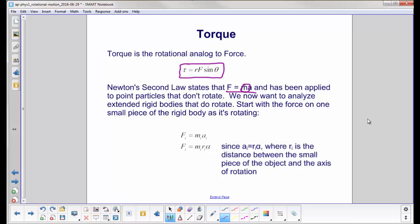Newton's second law has been applied to point particles that don't rotate. We now want to take an extended rigid body that does rotate. We'll start with the force on one small piece of the body.